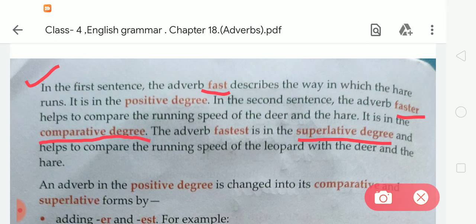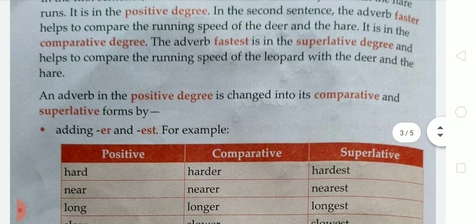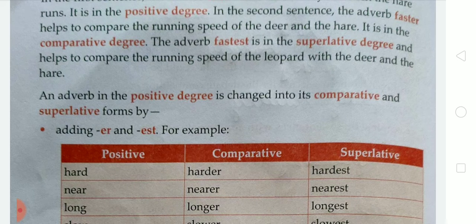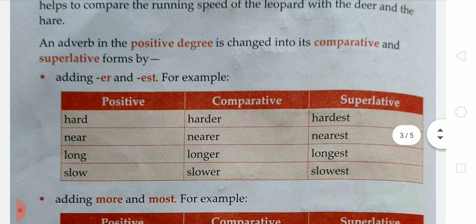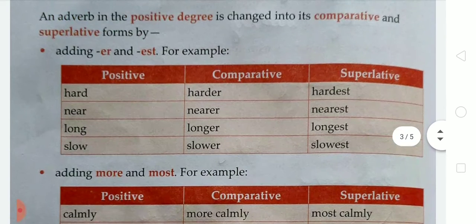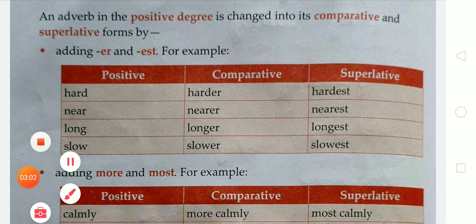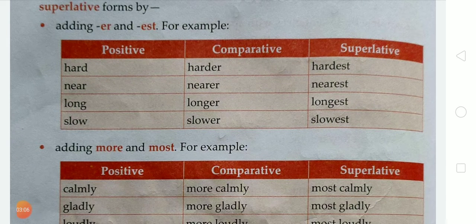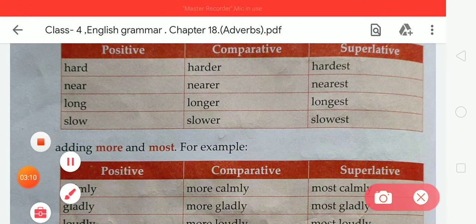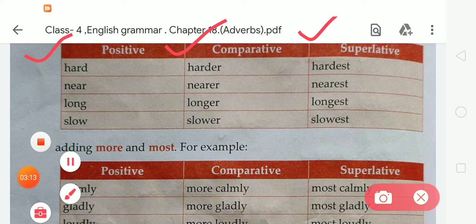An adverb in the positive degree is changed into its comparative and superlative form by adding ER and EST. There are some examples for you — have a quick look. You can see there are three columns: the first for positive, the second for comparative, and the third for superlative.